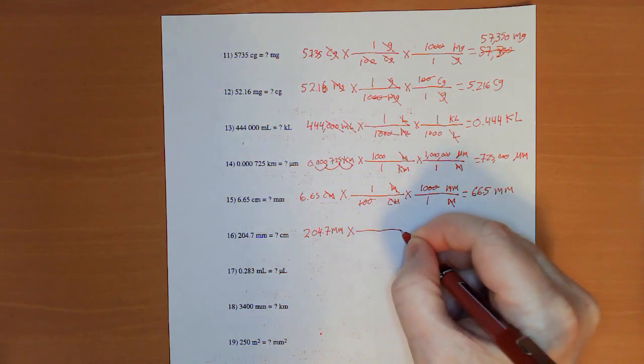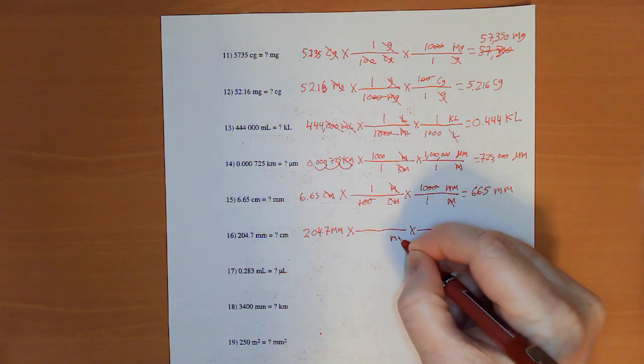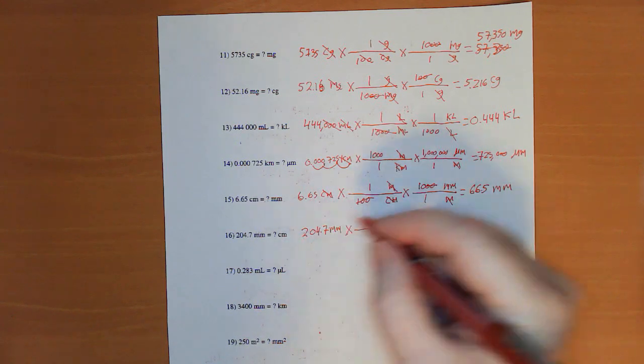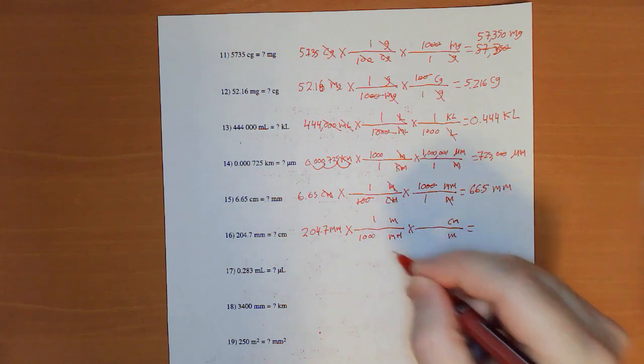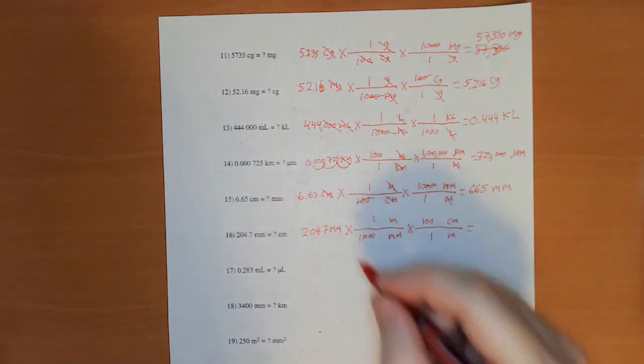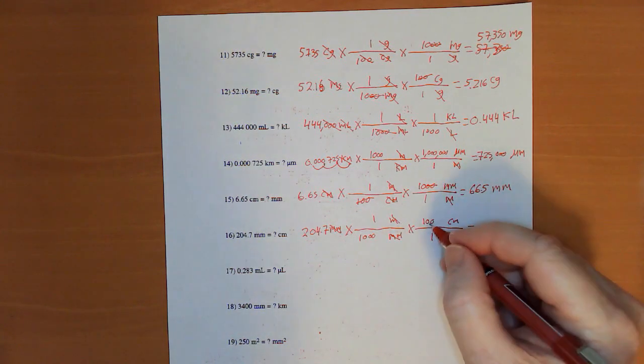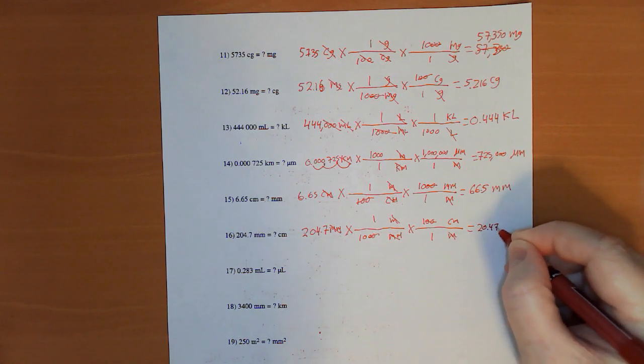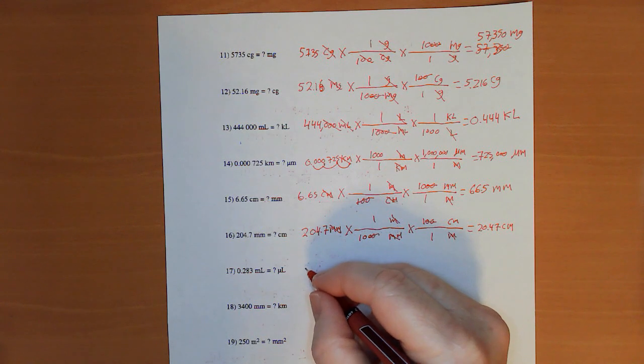Now, 204.7 millimeters. Times. Times. Millimeters to meters. Meters to centimeters. This is kind of repetitive. But you will be very good at it by the end of this homework. And we'll be able to move on to other things. Those two zeros will take off those two zeros. And it's 20.47 centimeters.